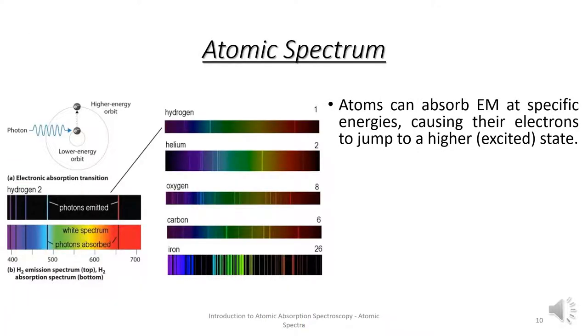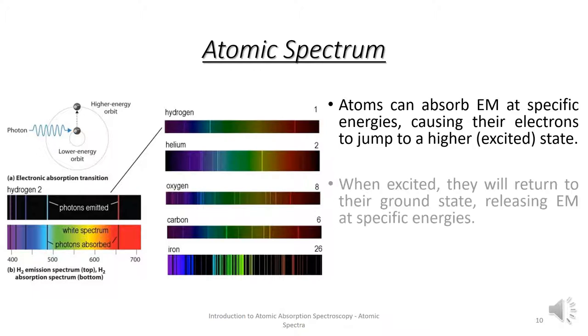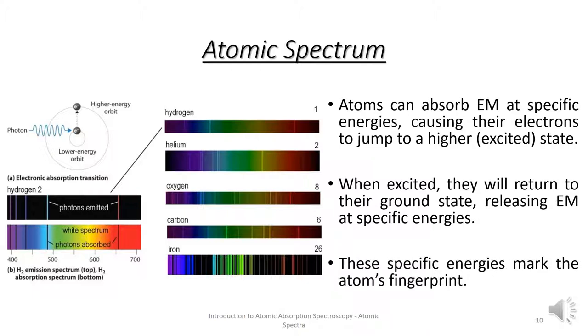Atoms in the ground state can absorb light at specific energies. This causes their electrons to jump to a higher excited state. When they are excited, they will eventually return to the ground state and release light energy. These specific energies mark the atom's fingerprint. Each element has its own unique atomic spectrum. This allows us to identify them.